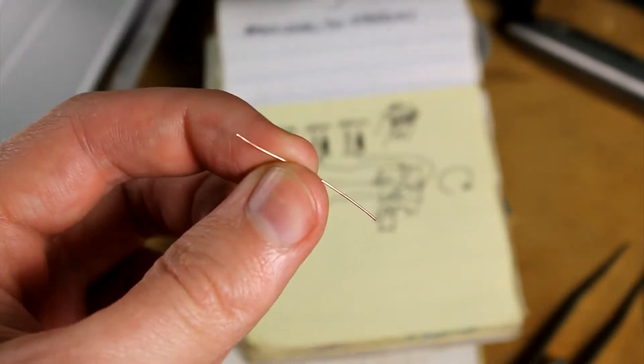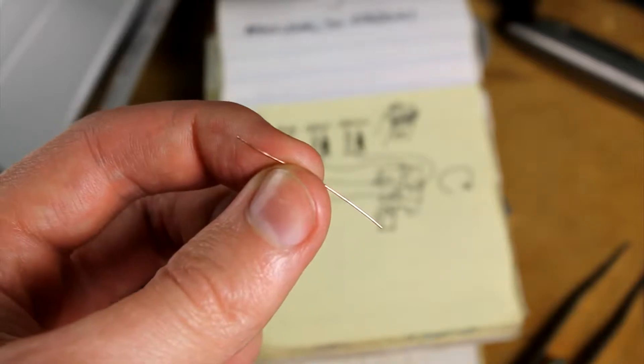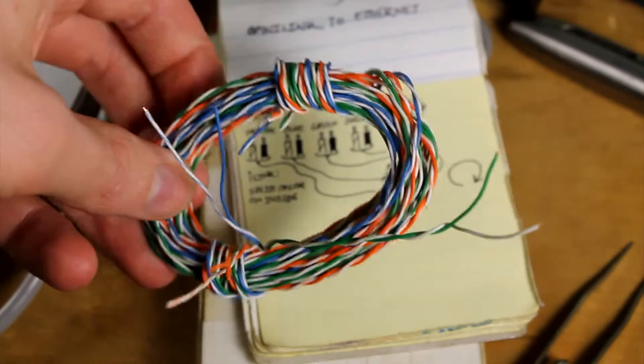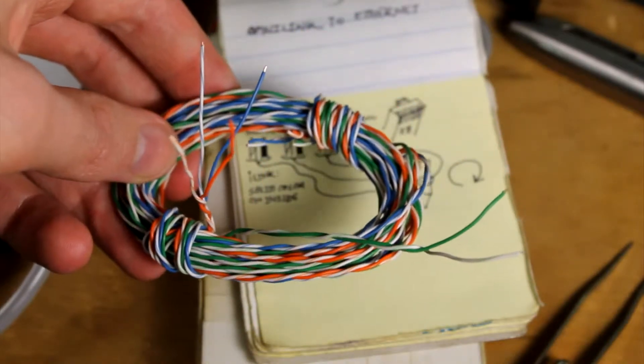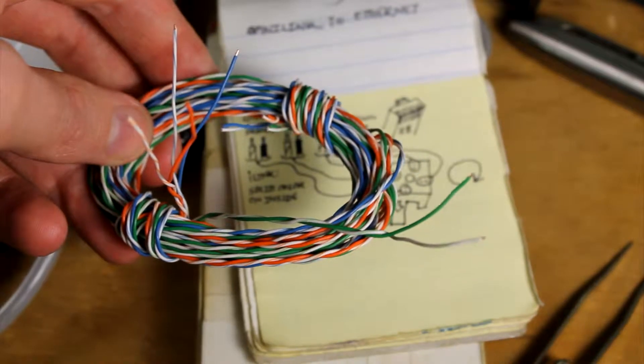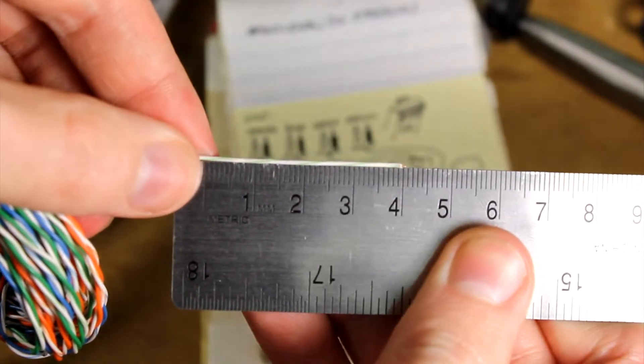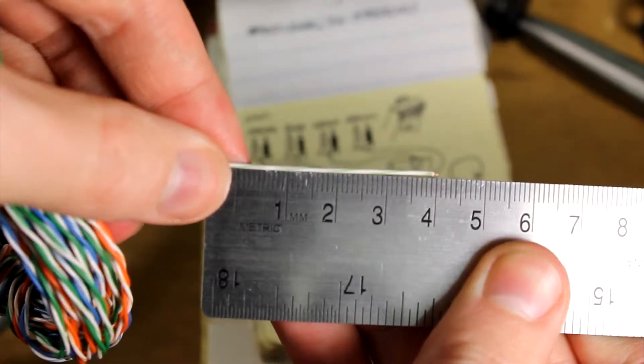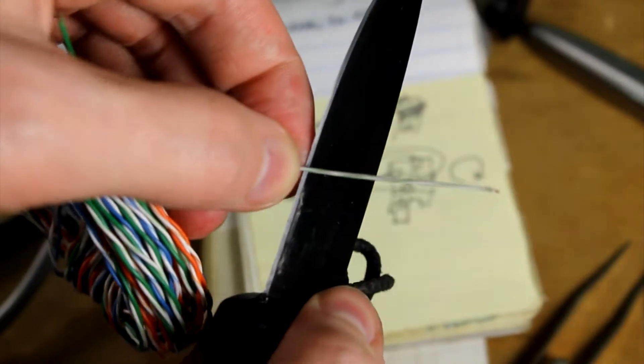Alright, so step one is to get a short little piece of copper wire like this. I have this old spool of stripped solid core copper wire from ethernet cable that I'm using for my small copper leads. So I'm measuring at about 4 centimeters of the solid core copper wire. Then I'm going to score the wire on both sides.